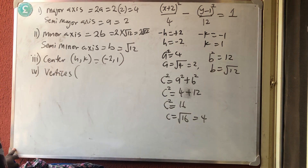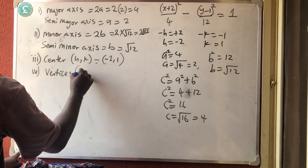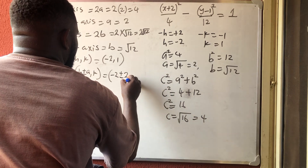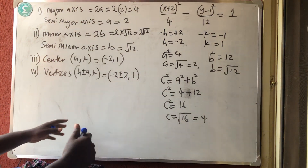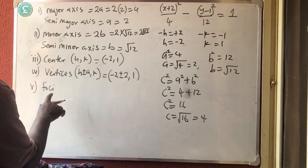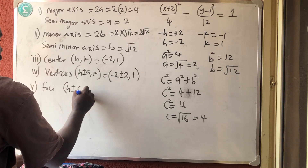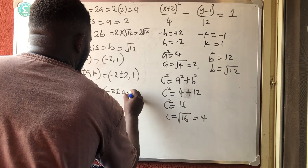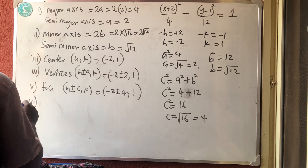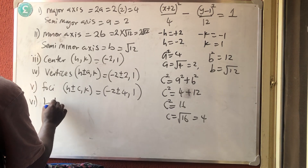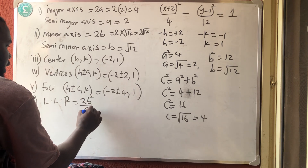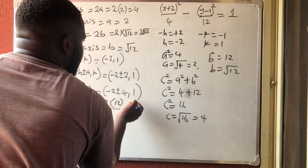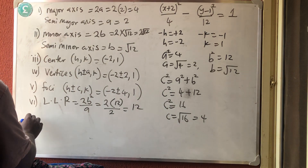The vertices: since the x term is dominant, add a to h — vertices are (h ± a, k) = (−2 ± 2, 1), giving (0, 1) and (−4, 1). The foci: (h ± c, k) = (−2 ± 4, 1), giving (2, 1) and (−6, 1). The length of the latus rectum = 2b²/a = 2 × 12 / 2 = 12.